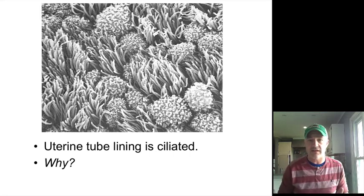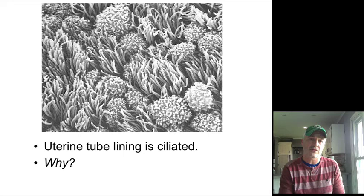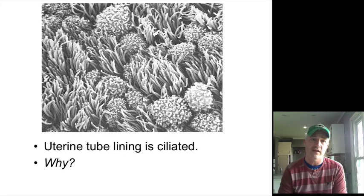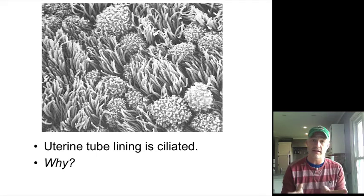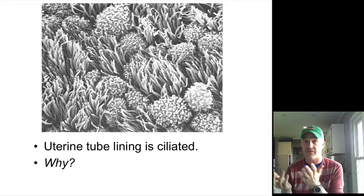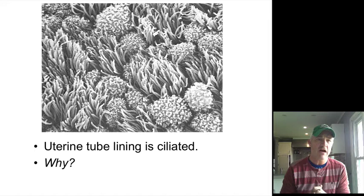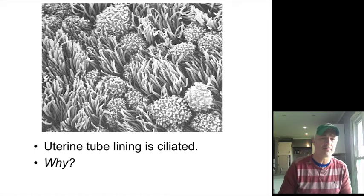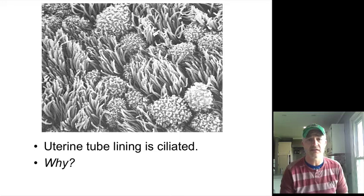Uterine tubes are lined with ciliated columnar epithelium, which creates a current to move the oocyte down to the uterus. Fertilization generally takes place in the tubes. We want the fertilized embryo to travel down and implant in the uterus. If it implants anywhere else, it is not a viable pregnancy—that is referred to as an ectopic pregnancy, or a tubal pregnancy if implantation occurs in the tube.